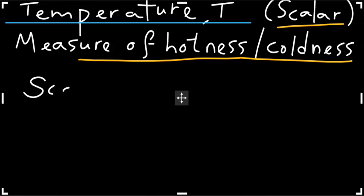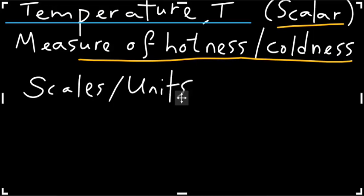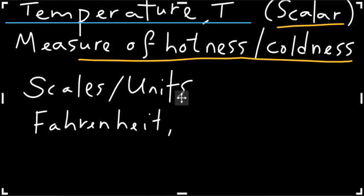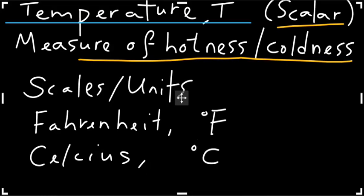There are three scales or units that we can use to quantify temperature. The first one is the Fahrenheit scale, with the unit degrees Fahrenheit. The second one is the Celsius scale, with the unit degrees Celsius. The third one is the Kelvin scale, with the abbreviation K. Note there is no 'degree Kelvin' — just capital K.